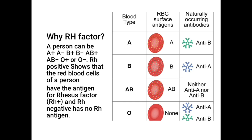The antigen on the red blood cell specifies the blood group of the patient. For blood group A, the antigen is A. Since the antigen is A, this is blood group A, and this patient has antibody B in the serum. The antibody is present not on the surface of red blood cells but in the serum or plasma.